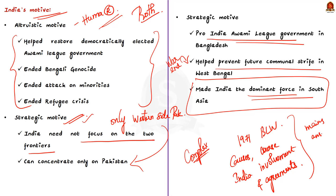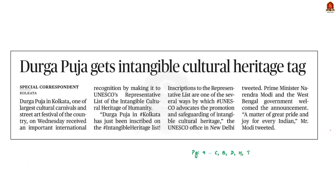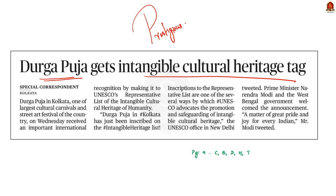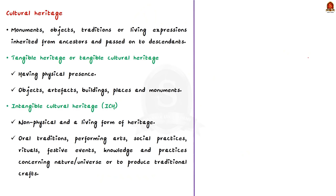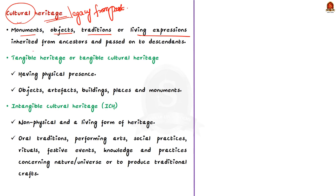Let's take up the next news article. One of India's cultural events, Durga Puja, has got the UNESCO Intangible Cultural Heritage tag. When we say culture, it refers to the ideas, customs and social behavior of a society, including its arts and intellectual achievements. Heritage is the valued objects and qualities in those cultures — our legacy from the past that we live with today and pass on to future generations. Cultural heritage represents the monuments, objects, and living expressions we inherited from our ancestors.